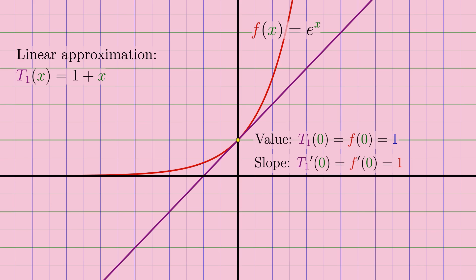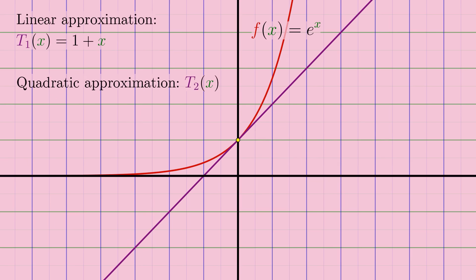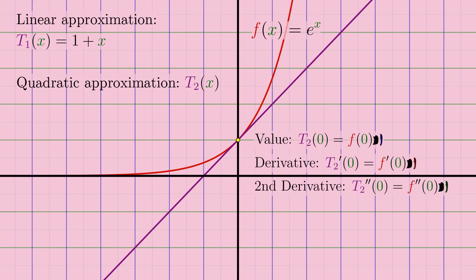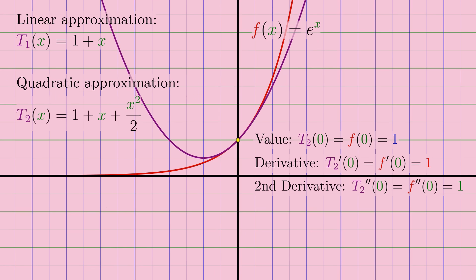From here, we can improve the approximation by using a higher degree polynomial. A linear approximation is good, but a quadratic approximation is better. And the best quadratic approximation of a function near a point is one that matches the function's value, derivative, and second derivative at that point. Since all these values are one at x equals zero for e to the x, the best quadratic approximation of it is one plus x plus x squared over two, where we have to divide by two here to compensate for the factor of two that will pop out when taking the derivative of x squared.